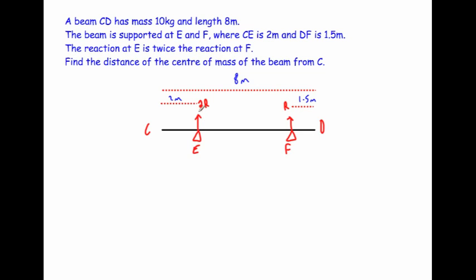The reaction at E is twice the reaction at F, so I've put in 2R and R. I could have put in R and a half R, but I've just gone for 2R and R. And it says find the distance of the centre of mass of the beam from C. So we're trying to find the centre of mass of this beam from this point here C.